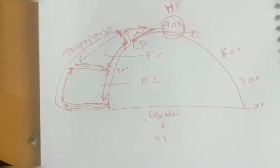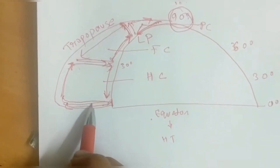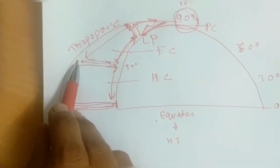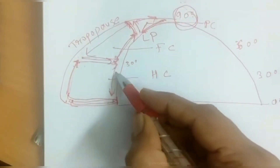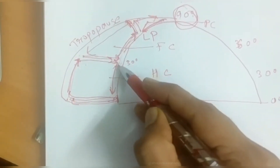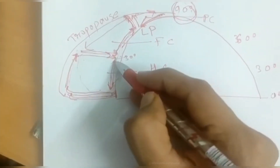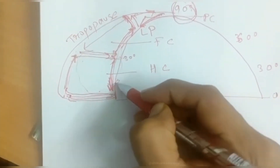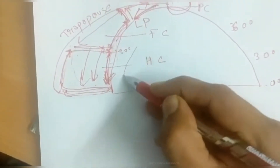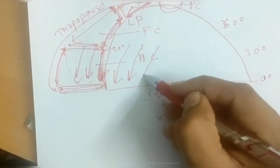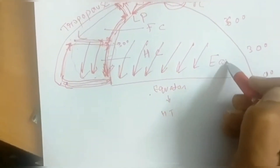Let us understand the movement of air along these cells. At the equator the air is rising, moving along the tropopause, cooling down and sinking at around 30 degrees. Then one air current moves towards the pole and one moves towards the equator, completing one cell. The direction of air on the surface from the tropics to the equator is in the form of easterly winds.